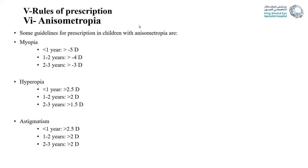Some prescription rules for anisometropia: for myopia — less than one year, prescribe if difference is more than five diopters; one to two years, prescribe if more than four; two to three years, prescribe if more than three. For hyperopia — less than one year, prescribe if more than 2.5; one to two years, prescribe if more than two; two to three years, prescribe if more than 1.5. For astigmatism — less than one year, prescribe if 2.5 diopters; one to three years, prescribe if difference is more than two diopters.